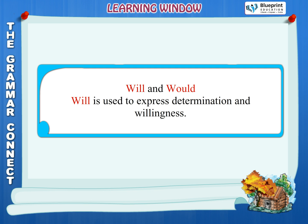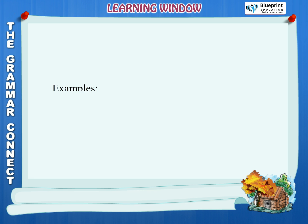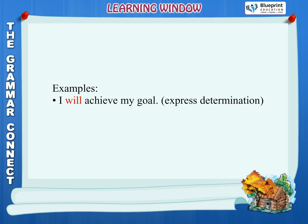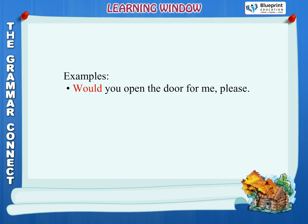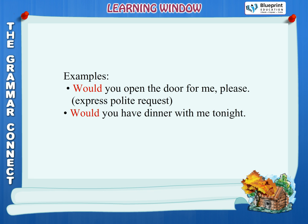Will and would. Will is used to express determination and willingness. Examples: I will achieve my goal — express determination. I will do the work — express willingness. Would is used to make polite requests and ask questions. Examples: Would you open the door for me please? — express polite request. Would you have dinner with me tonight? — polite question.